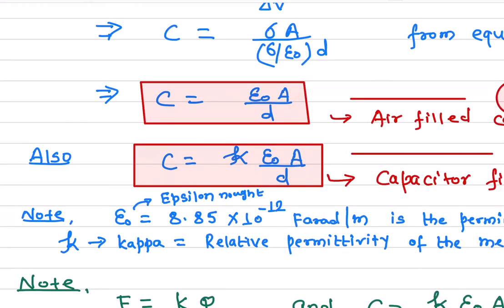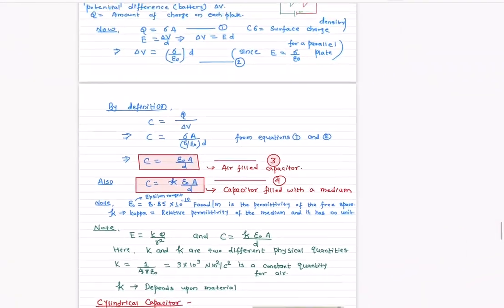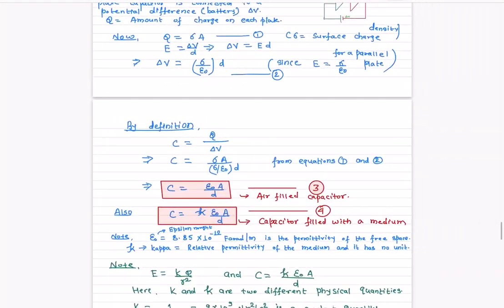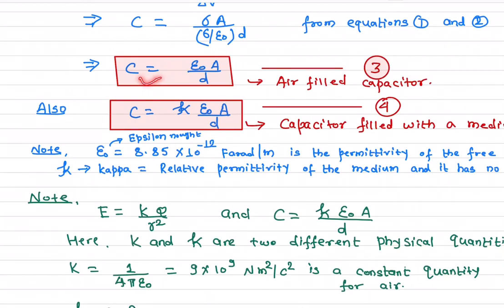This equation tells us that the capacitance does not depend on the charge and does not depend on the applied potential. It only depends on the area and the distance between the plates. This equation is only for an air-filled capacitor — when the medium between the two plates is air.